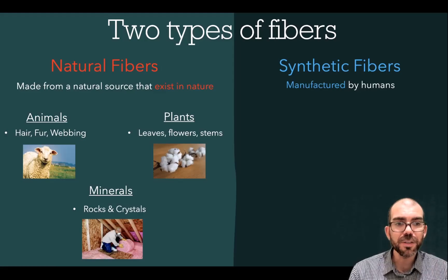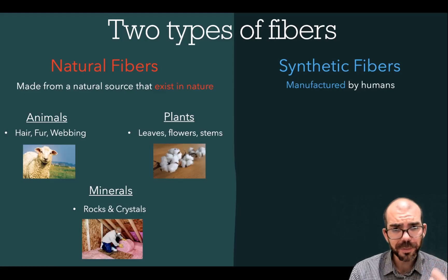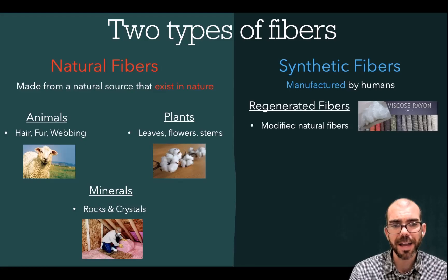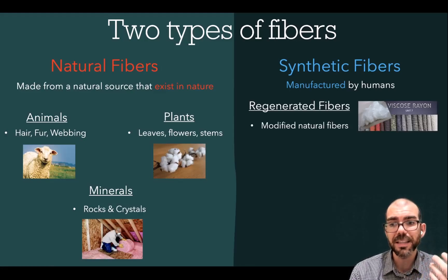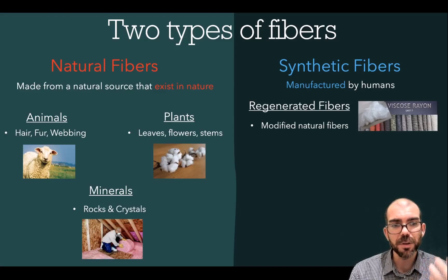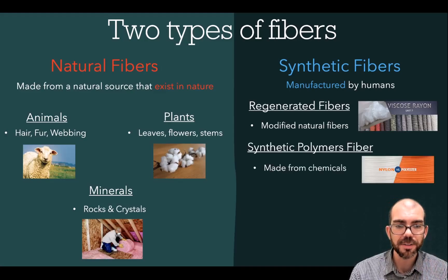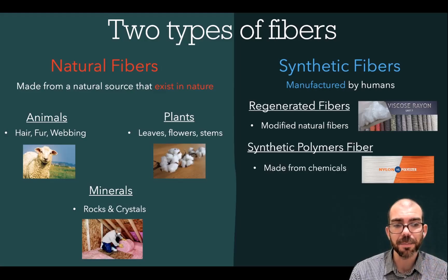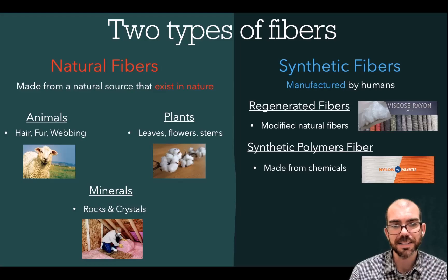With synthetic fibers, these are fibers manufactured by humans and they come in two primary varieties. One is regenerated fibers — these are natural fibers like animal fur or plants, but modified to add more strength or a new texture using manufactured human products. The second category is completely synthetic fibers: synthetic polymers made from chemicals that are then spun into textiles.